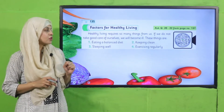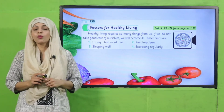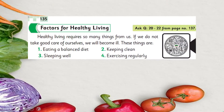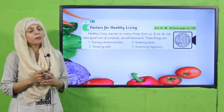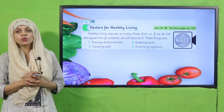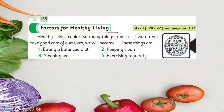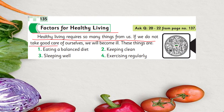Now it's time for reading. Please open page number 135 in your GK books. Let's start the reading. Practice for healthy living: healthy living requires so many things from us. If we do not take good care of ourselves, we will become ill. These things are eating a balanced diet, keeping clean, sleeping well, and exercising regularly.